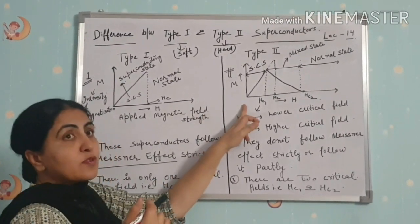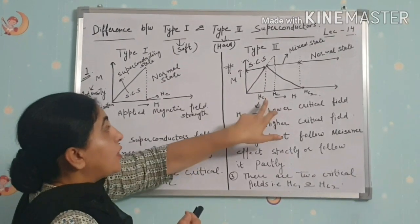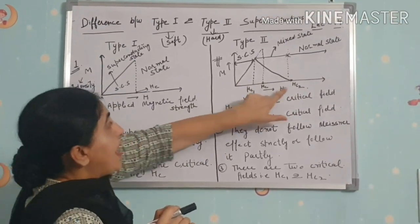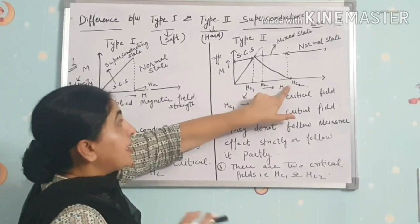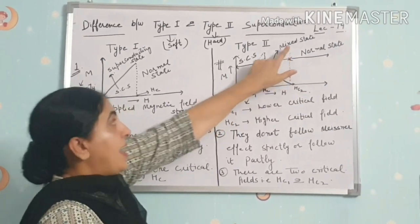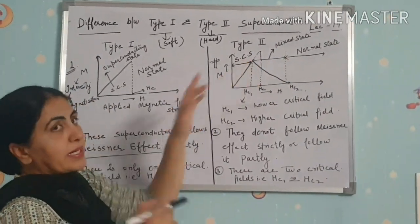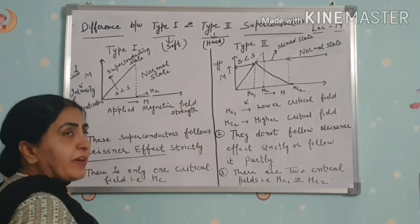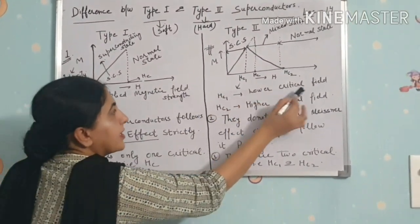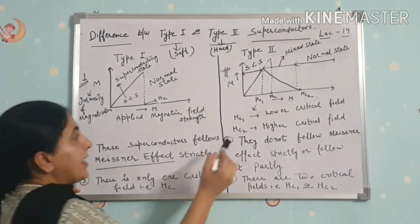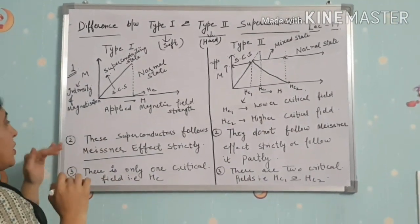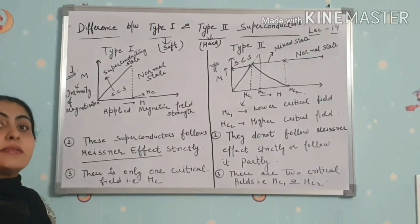For Type 2 superconductors, there are two critical fields: Hc1 and Hc2. Below Hc1 it is in a superconducting state; between Hc1 and Hc2 it is in a mixed state; and above Hc2 it is in the normal state. Hc1 is the lower critical field and Hc2 is the higher critical field.